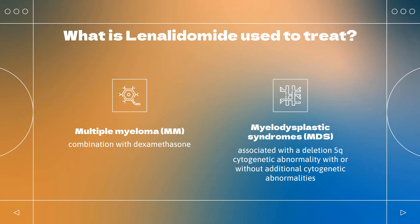Lenalidomide is indicated for the treatment of adult patients with mantle cell lymphoma (MCL) whose disease has relapsed or progressed after two prior therapies, one of which included bortezomib. In combination with a rituximab product, lenalidomide is indicated for the treatment of adult patients with previously treated follicular lymphoma (FL) or previously treated marginal zone lymphoma (MZL).